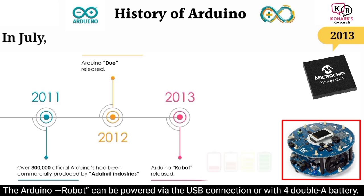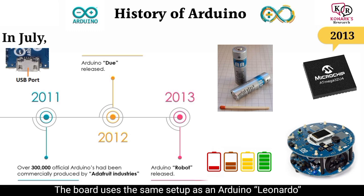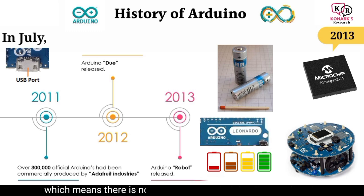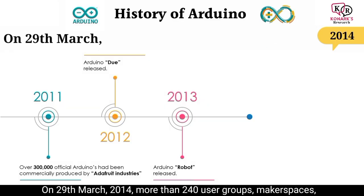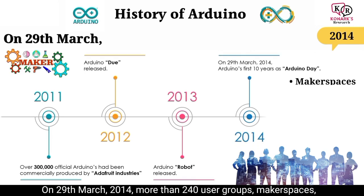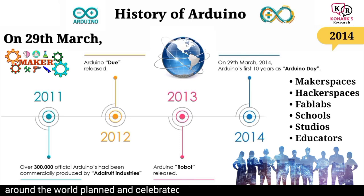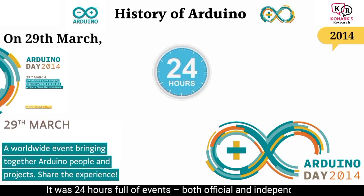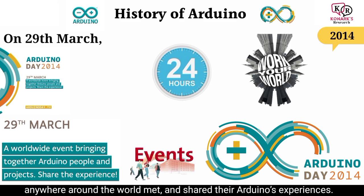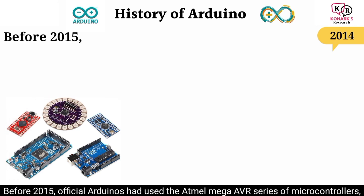In July 2013, the first official Arduino Robot was released, based on the ATmega32U4 AVR microcontroller. The Arduino Robot can be powered by USB or with four AA batteries and uses the same setup as the Arduino Leonardo, meaning there is no need for a separate serial-to-USB chip. On 29 March 2014, more than 240 user groups, makerspaces, hackerspaces, fab labs, schools, and educators around the world celebrated Arduino's first 10 years as Arduino Day — 24 hours full of official and independent events worldwide.